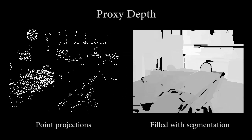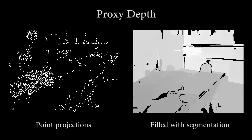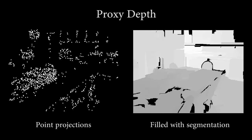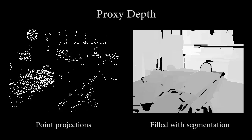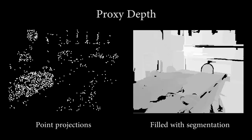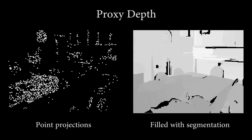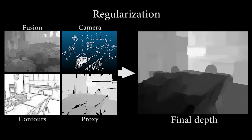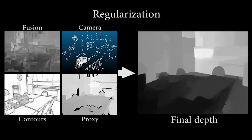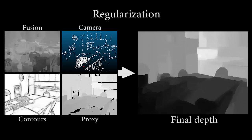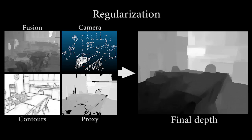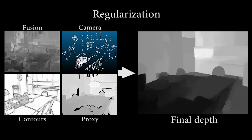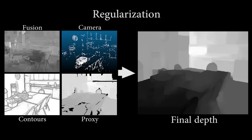Structure from motion provides accurate but sparse point-wise depth. We construct rough proxy depth maps by using video segment volumes to densify the sparse points. These maps are neither dense nor consistent over time. We regularize the estimated depth using the contours and proxy maps. Optical flow temporarily links them during optimization. Finally, we obtain accurate, coherent, and dense depth maps over time that preserve strong surface discontinuities.